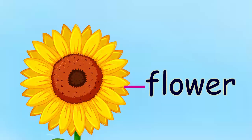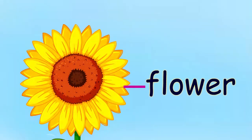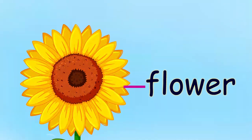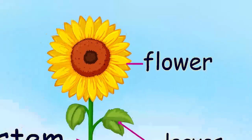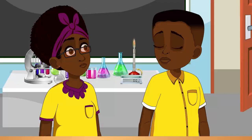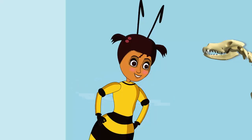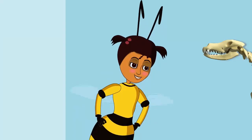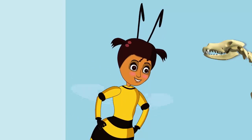The flower is the part of a plant responsible for making the fruit. Flowers contain the reproduction organs and help the plant to produce. Wow — leaves help us to breathe. That is wonderful!